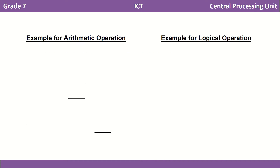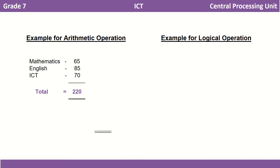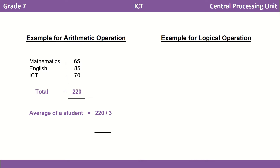Let's discuss this with an example. Here is a brief description of a student's marks in three subjects in a school term test. The teacher wants to collect the total marks of the student, so she adds the marks obtained for all three subjects. The answer is 220. Now she wants to find the rank in the class, so she finds the average by dividing 220 by 3, which gives 73.33. The arithmetic operations performed here are addition and division.